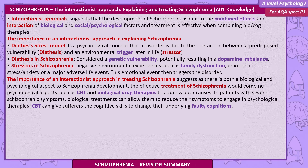The diathesis in schizophrenia is considered a genetic vulnerability, potentially resulting in a dopamine imbalance. Stressors include negative environmental experiences such as family dysfunction, emotional stress and anxiety, or a major adverse life event, which then triggers the disorder. In treating schizophrenia, the interactionist approach suggests combining psychological aspects such as CBT with biological drug therapies to address both causes. In patients with severe symptoms, biological treatments can reduce symptoms enough to allow engagement in psychological therapies, and CBT can then give sufferers cognitive skills to change their underlying faulty cognitions.